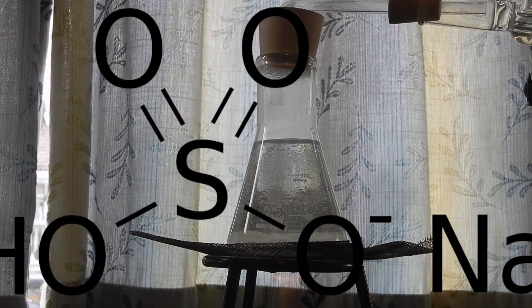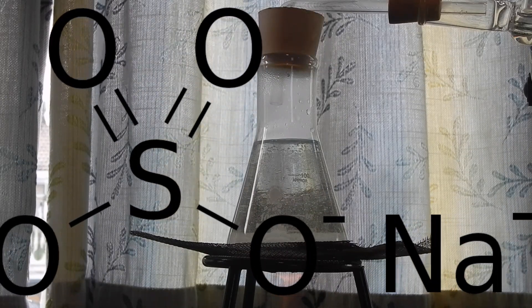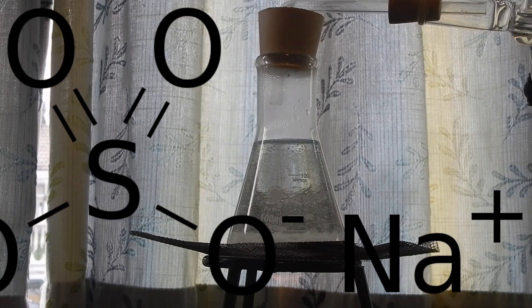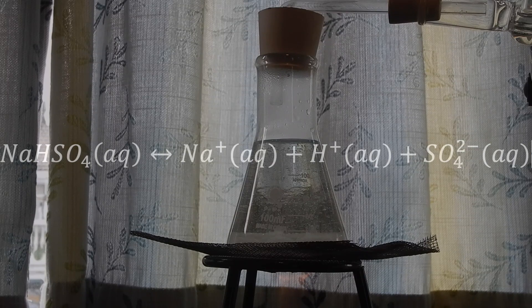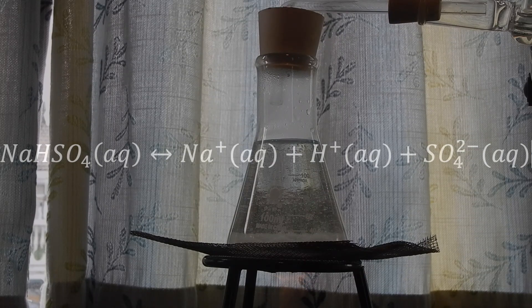The sodium bisulfate, NaHSO4, has a hydrogen in its molecule that is able to dissociate into hydrogen ions. Therefore, it has a strong acidity, and is commonly used as a substitute of sulfuric acid.